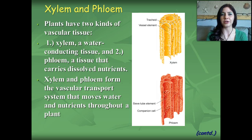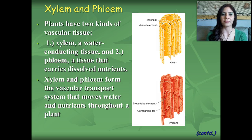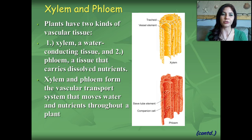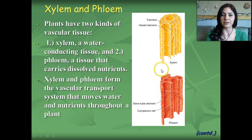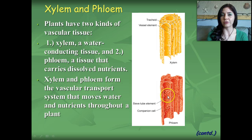Xylem and phloem are the two main types of transport tissue within the plant. Xylem is a water-conducting tissue and phloem controls the nutrient flow. The way I always remember the difference: phloem, food — a mnemonic device — and xylem transports water. Xylem and phloem form a vascular transport system. Xylem contains tracheids and vessel elements and transports water, while phloem is responsible for transporting nutrients throughout the plant wherever the plant may need them.